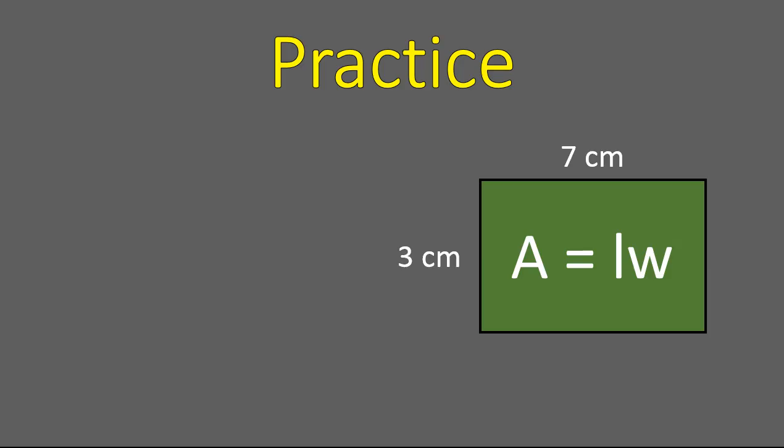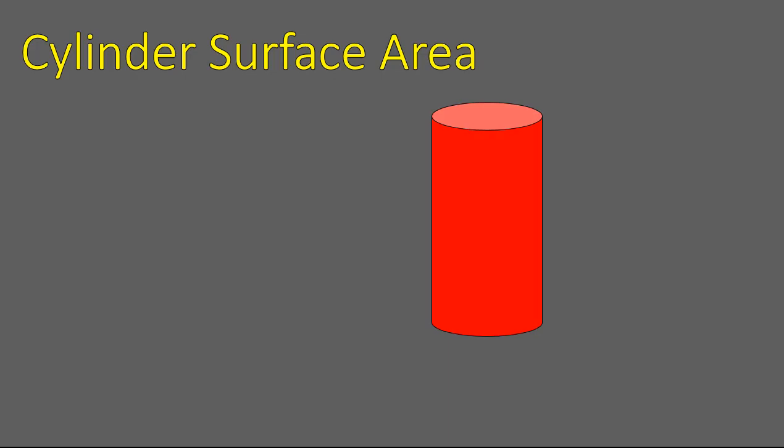Welcome back. The area would be 7 times 3, which is 21 square centimeters. So area of a rectangle is very straightforward, and area of a circle is pretty straightforward. What we're going to do now is combine these two to find the surface area of a cylinder.